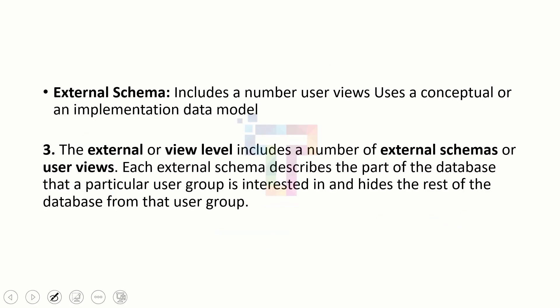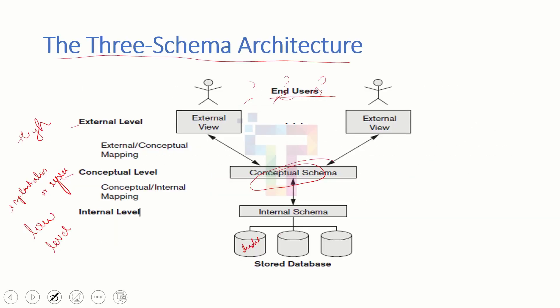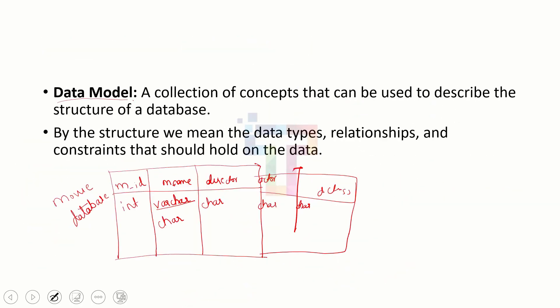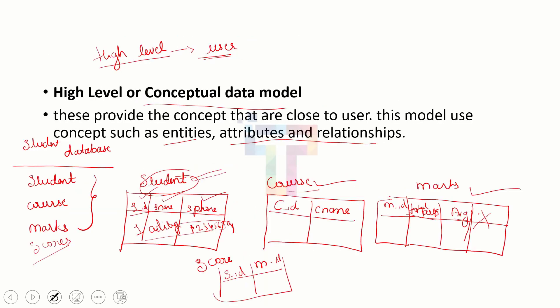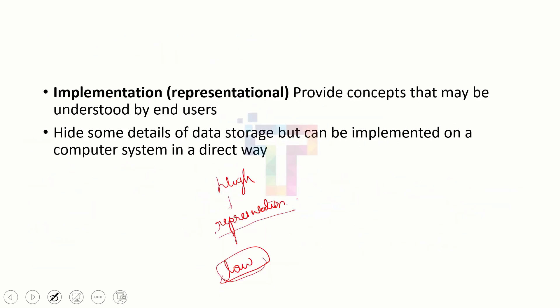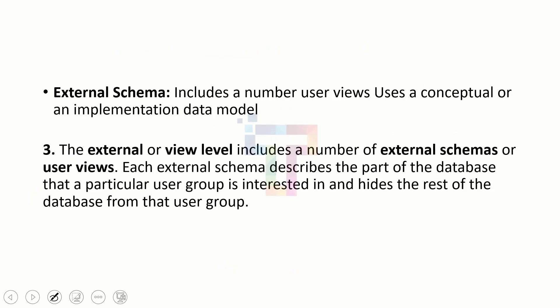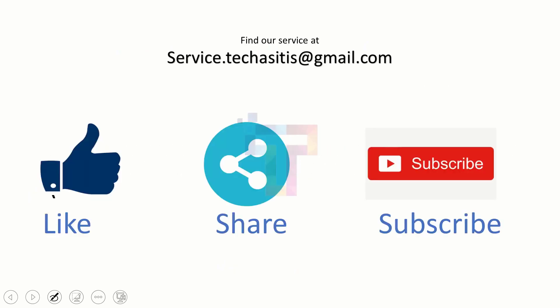I hope today's concepts you all understood. We have seen data model, categories of data model, and three-schema architecture. You can find our service at this email ID: service.techasitis@gmail.com. Like, share, and subscribe. Thank you.